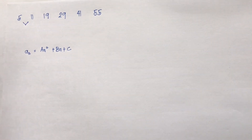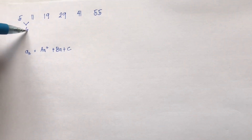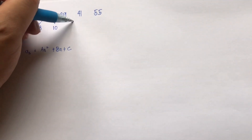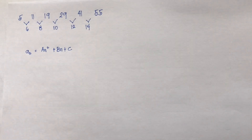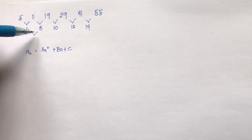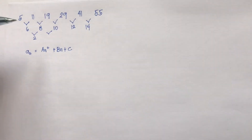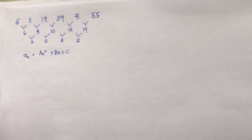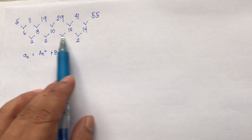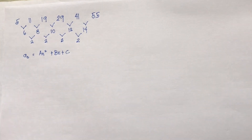First, get the interval of each number to verify this is a second-degree sequence. From 5 to 11 is 6, 11 to 19 is 8, 19 to 29 is 10, 29 to 41 is 12, and 41 to 55 is 14. Then the second layer: 6 to 8 is 2, 8 to 10 is 2, 10 to 12 is 2, 12 to 14 is 2. Since the second differences are constant, this is indeed a second-degree sequence.